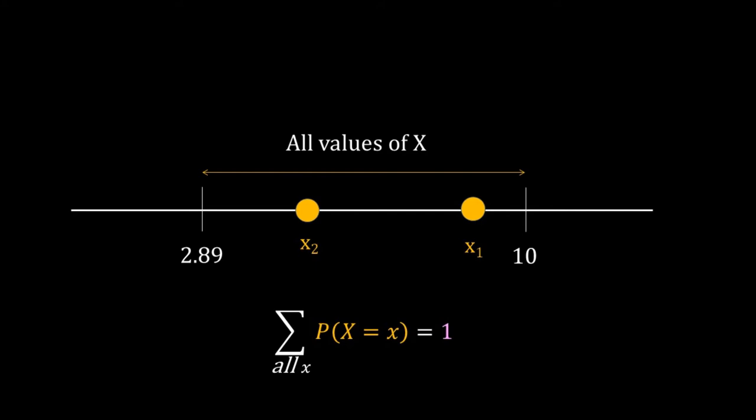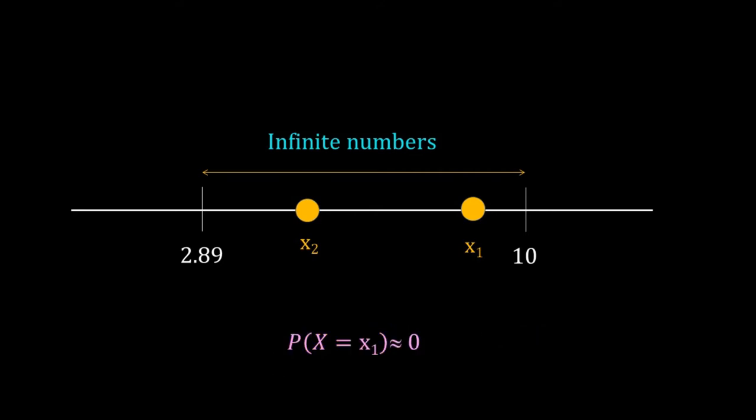From probability theory we know that the sum of all those probabilities must equal 1. But there are an infinite number of values of X in this range, so I have an infinite number of probabilities, and all those probabilities add to 1. Therefore the probability that X takes a particular value in this range is infinitely small — in other words, 0. That is why we do not calculate the probability that X equals a particular value like 3.568.